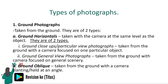Digging deeper into the ground horizontal photographs, we have two types. First, the ground close-up, which is taken from the ground with the camera focused on one particular object. And we have the ground general view photographs, which is taken from the ground with the camera focused on general scenery.